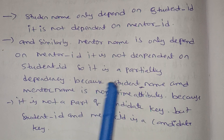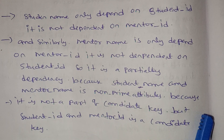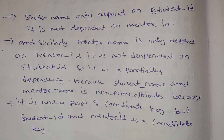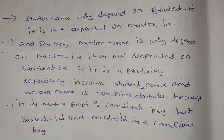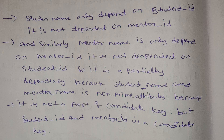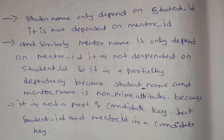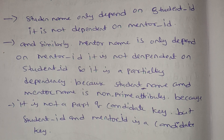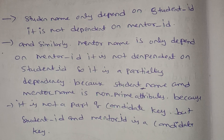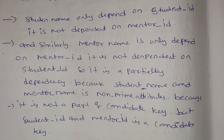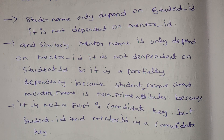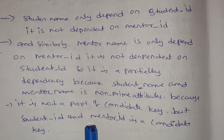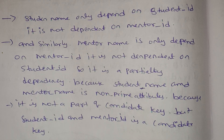So it is a partial dependency, because Student Name and Mentor Name are non-prime attributes. Student Name, Mentor ID, and Mentor Name are even non-prime attributes because they are not part of a candidate key. Student ID and Mentor ID are the candidate keys. Non-prime attributes should be fully dependent on the candidate key, but here there is partial dependency.